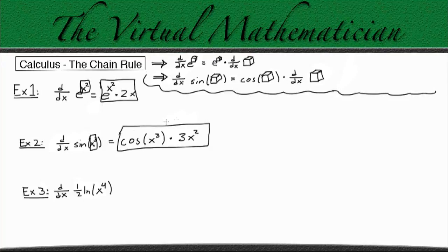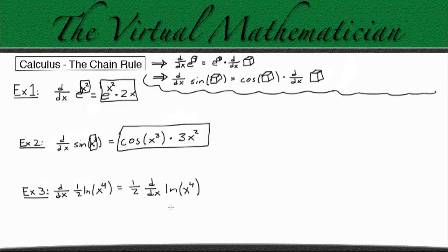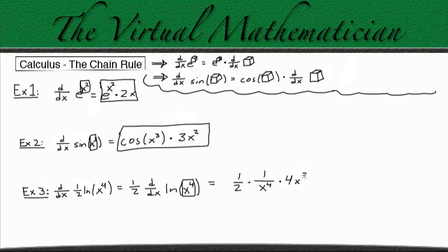Now let's look at example three. We have to take the derivative of one half times the natural log of x to the fourth. We know we can always pull out constants for derivatives, so we can rewrite this as one half times the derivative of the natural log of x to the fourth. The derivative of the natural log is one over whatever's on the inside, so in this case it's x to the fourth, giving us one half times one over x to the fourth. Then we take the derivative of what's inside, which is x to the fourth, so we multiply by 4x cubed. We can simplify this as four halves times x cubed over x to the fourth, which simplifies again to 2 over x.